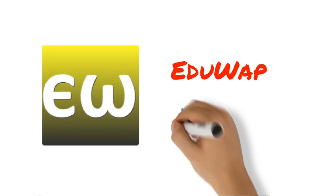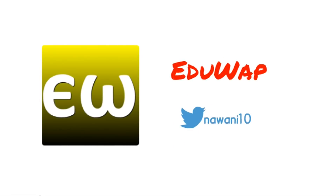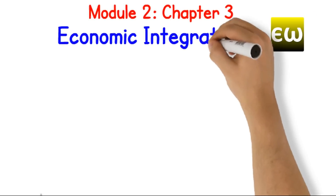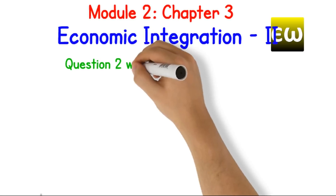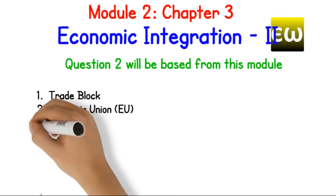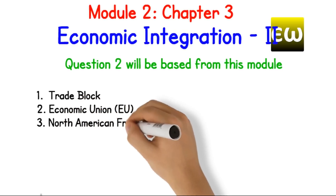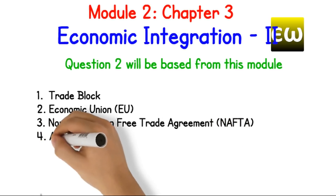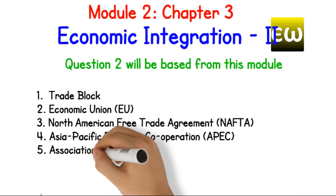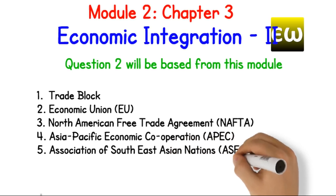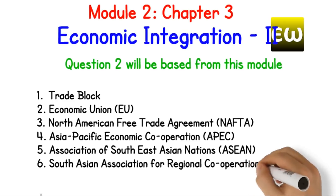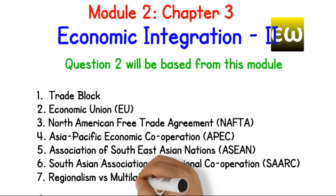Welcome to EUWAP, your one-stop solution for e-learning. Chapter 3 of Module 2: Economic Integration. Question 2 will be based from this module. Topics covered: 1. Trade Block, 2. Economic Union, 3. North American Free Trade Agreement, 4. Asia-Pacific Economic Cooperation, 5. Association of Southeast Asian Nations, 6. South Asian Association for Regional Cooperation, 7. Regionalism vs. Multilateralism.